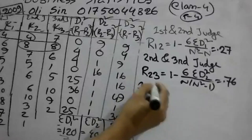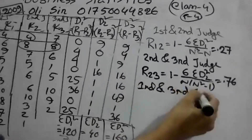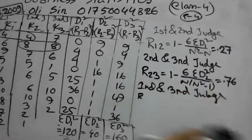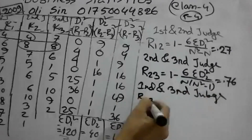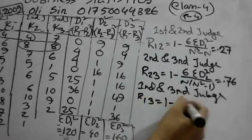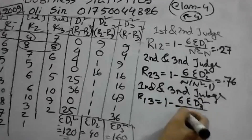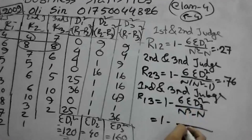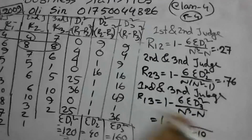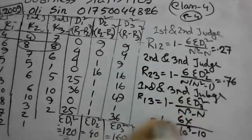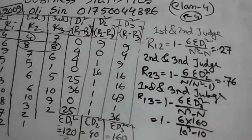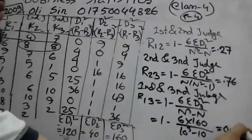For the second and third judges, we use D3 squared divided by N cubed minus N, which gives us one to one relationship. The result for second and third is 18.